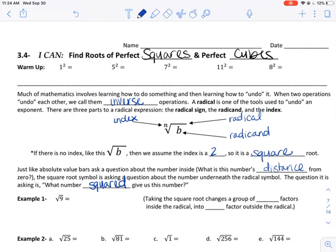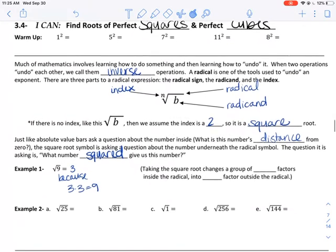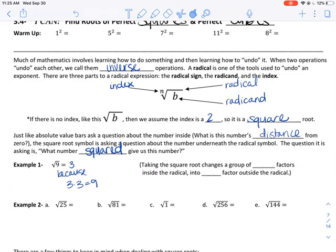So for example one, the square root of 9, well what number times itself equals 9? 3. Because 3 times 3 equals 9. Now you'll probably see why I asked you to memorize the perfect squares because it makes this a lot easier.